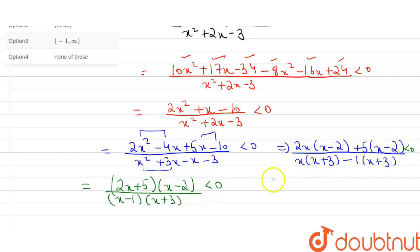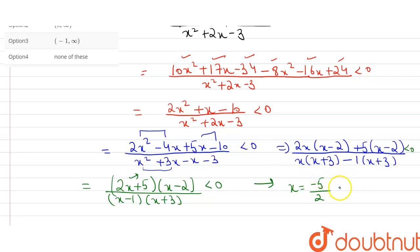Now for these four factors, we identify the critical points. For (2x + 5) = 0 the critical point is x = −5/2. For (x − 2) = 0 it is x = 2. For (x − 1) = 0 it is x = 1, and for (x + 3) = 0 it is x = −3.